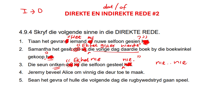Jeremy beveel — command. Alles om vinnig die deur toe te maak. So Jeremy beveel — my colon, and I open my quotes. We put our verb back where it belongs. We don't speak in the infinitive, so we remove the infinitive. Jeremy beveel: Alles, maak vinnig die deur toe! Exclamation mark, close quotes.